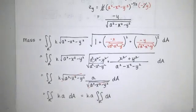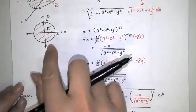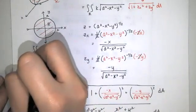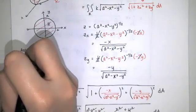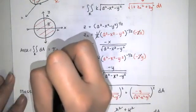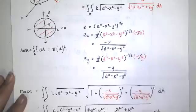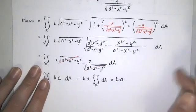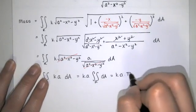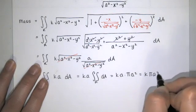I could evaluate this by switching to polar coordinates, but I already know the area of this circle. The area of region R is just the area of a circle, pi times r squared, and our radius is a. So we have pi times a squared, giving us k times a times pi times a squared, which equals k times pi times a cubed.